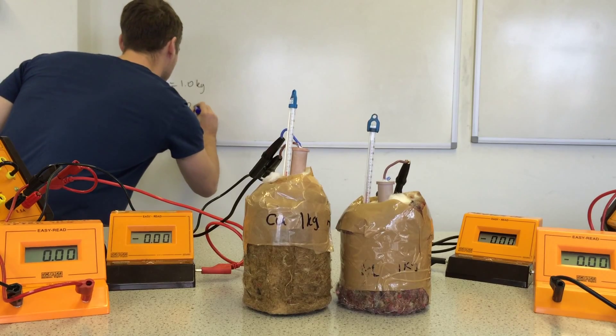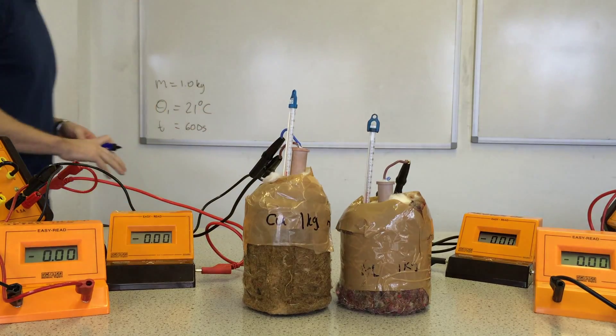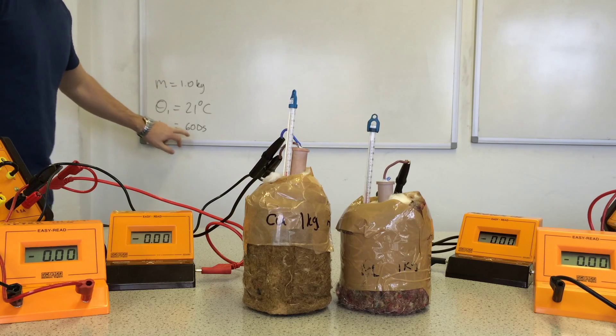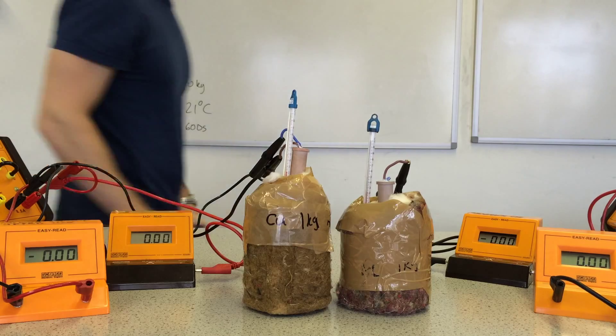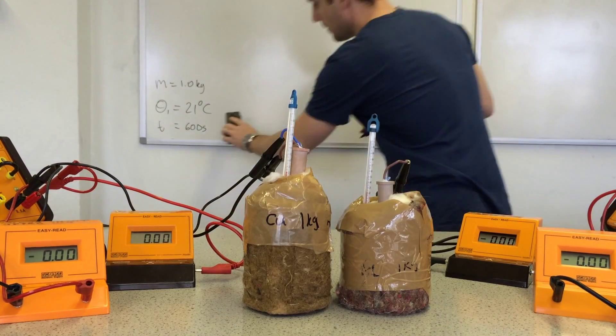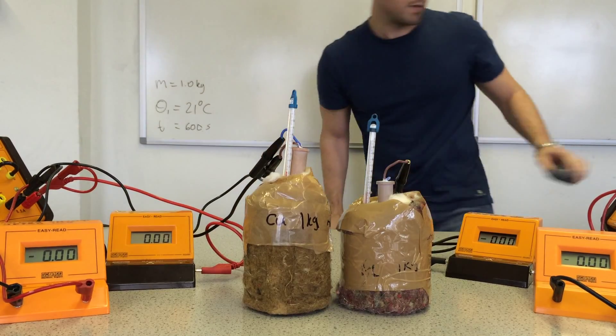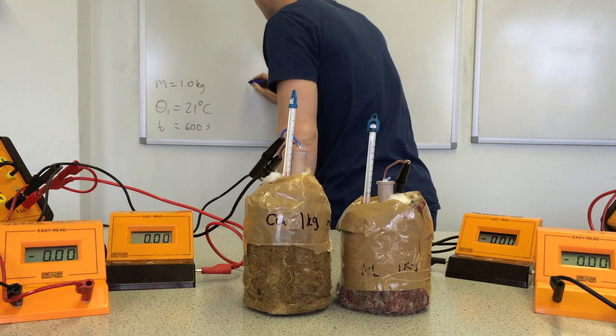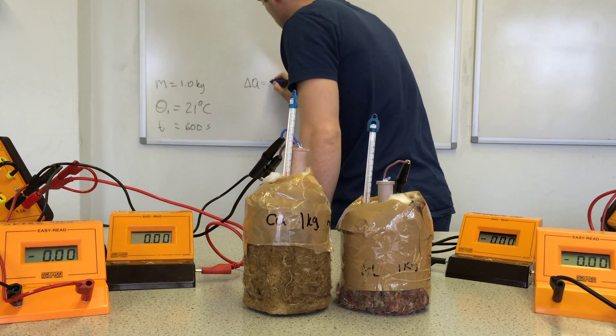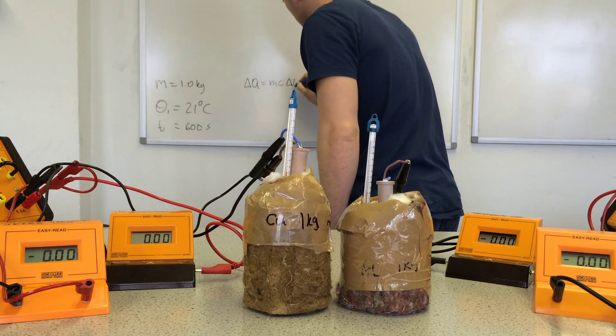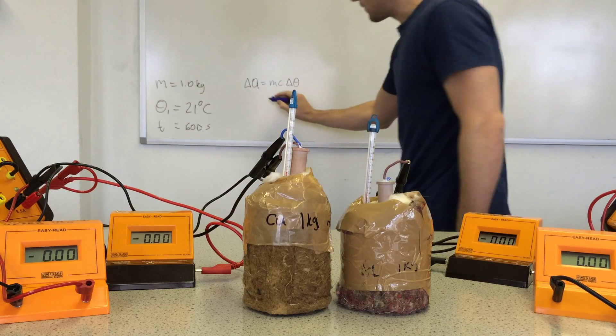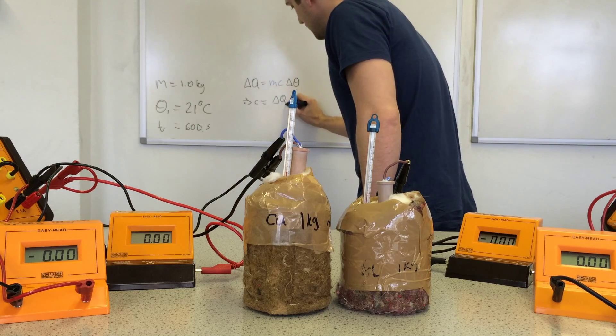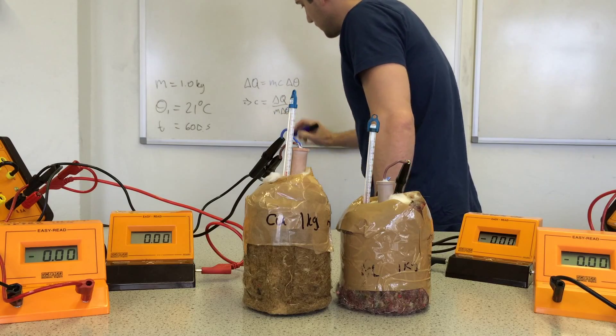Theta 1 is 21 degrees C. I have recorded the mass and we will be recording for 600 seconds. The equation we will be using is delta q equals mc delta theta. We will be looking for c, so c is delta q over m delta theta.